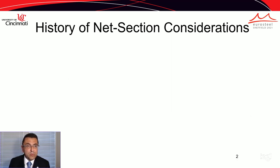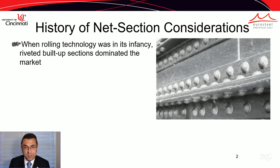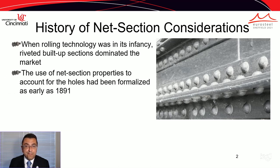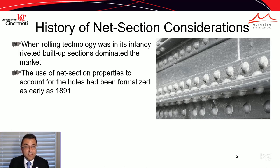Let's go through a quick history of net section considerations. At the infancy of the structural steel industry, rolling was not very well developed and only small sections could be rolled. As a consequence, to obtain large members, the only option was to build them up using angle sim plates and rivets to connect them together. Due to the large number of holes along the length of members, the use of net section properties had been formalized as early as 1891.